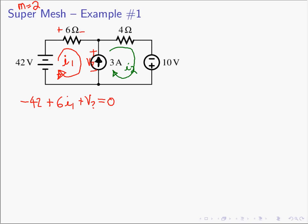Next, we do KVL around the second mesh, starting at the top. We get 4·I2 minus 10, and then back to the current source again. We don't know its voltage, and we've already defined V?, so we get minus V? equals 0. Here we have two equations because we have two mesh, but we have three unknowns. The third unknown comes from the current source being in between the two mesh — it gives rise to an extra unknown.